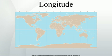Longitude is a geographic coordinate that specifies the east-west position of a point on the Earth's surface. It is an angular measurement, usually expressed in degrees and denoted by the Greek letter λ.